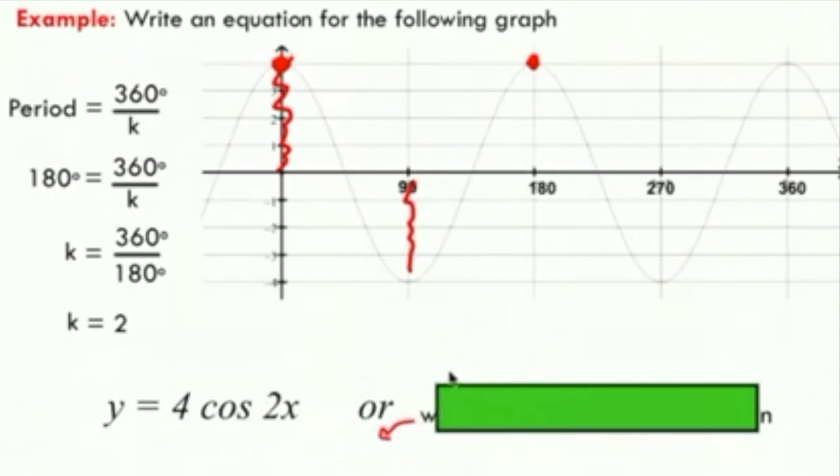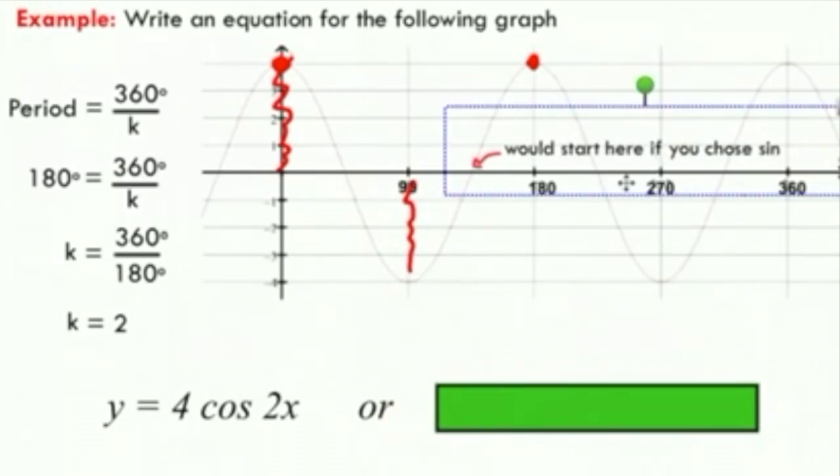Alternatively, if we looked at this as a sine graph, if we start right here, this could be our sine graph. Sine starts at zero, but this graph looks like it's starting in between 90 and 180 degrees. So we need some sort of phase shift here.